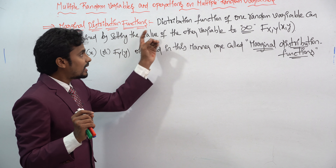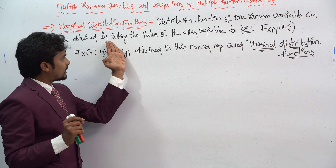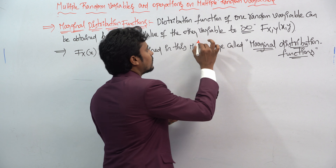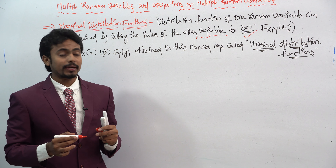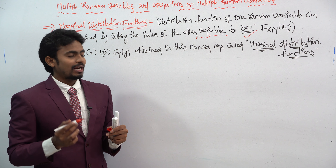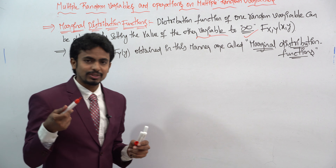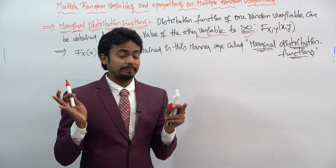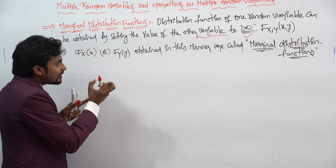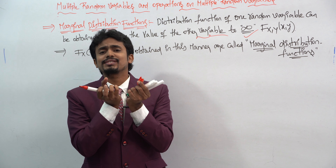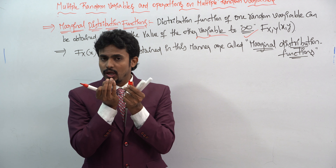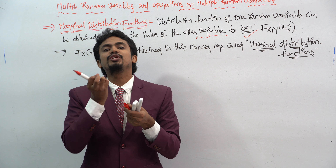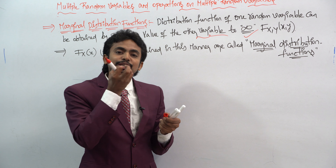That is the main thing to remember in the marginal distribution function. The distribution function of one random variable can be obtained by setting the other variable to infinity — this is very important. The distribution function is represented as capital F(X,Y) with small x, y. We take Fx(x) and Fy(y) individually rather than combining them as F(x,y).